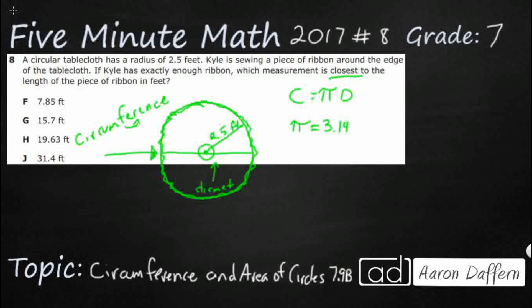I always think of the prefix di, which means two. It cuts my circle exactly in half. If this right here is a radius, and this right here is a radius as well, the diameter is simply double the radius. So the radius is 2.5. Let's just double that. That's 5. So my diameter equals 5 feet.